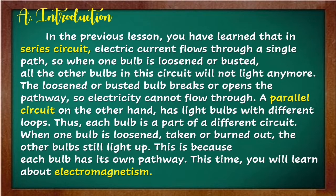A parallel circuit, on the other hand, has light bulbs with different loops. Thus, each bulb is part of a different circuit. When one bulb is loosened, taken, or burned out, the other bulbs still light up. This is because each bulb has its own pathway.